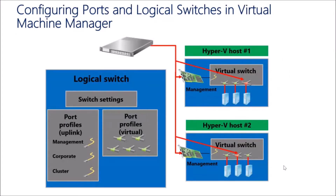So configuring a logical switch versus a virtual switch: on the right-hand side is what we already know. With Hyper-V1 and Hyper-V2, if we want a virtual switch for management, on Hyper-V1 we create a virtual switch with a physical uplink to the physical network called 'management', assign VMs to it, and can use different VLANs to segregate traffic. Then we go to Hyper-V host 2 and do exactly the same thing — and if we had 2,000 Hyper-V hosts, we'd do it 2,000 times.